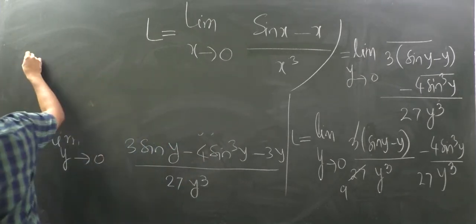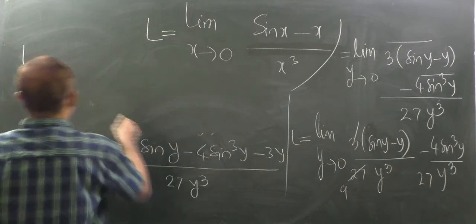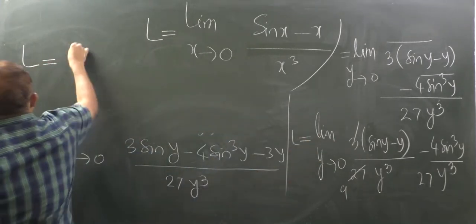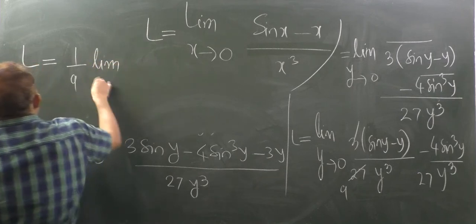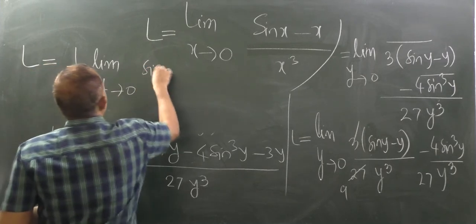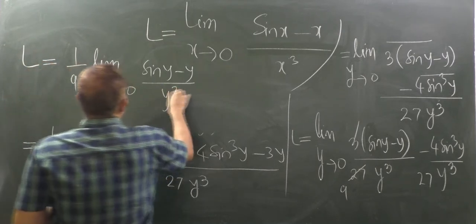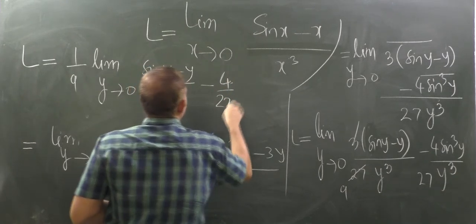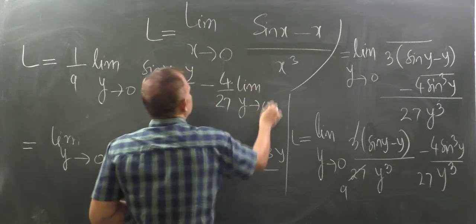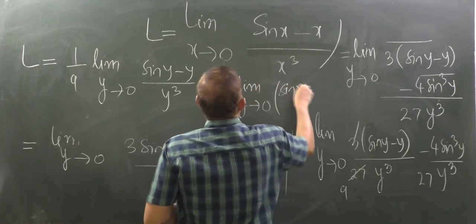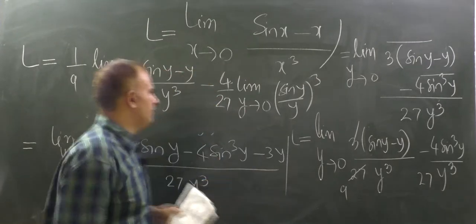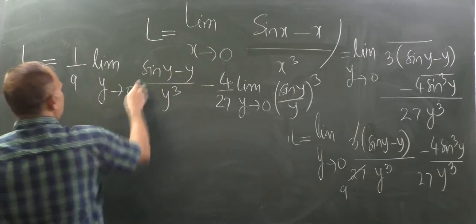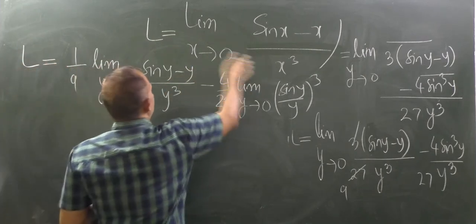So L equals 1/9 times limit y → 0 of (sin y − y) / y³, minus (4/27) times limit y → 0 of (sin y / y)³. The key insight is that limit y → 0 of (sin y − y) / y³ has exactly the same form as our original limit — it equals L. And we know that sin y / y → 1 as y → 0, so (sin y / y)³ → 1.